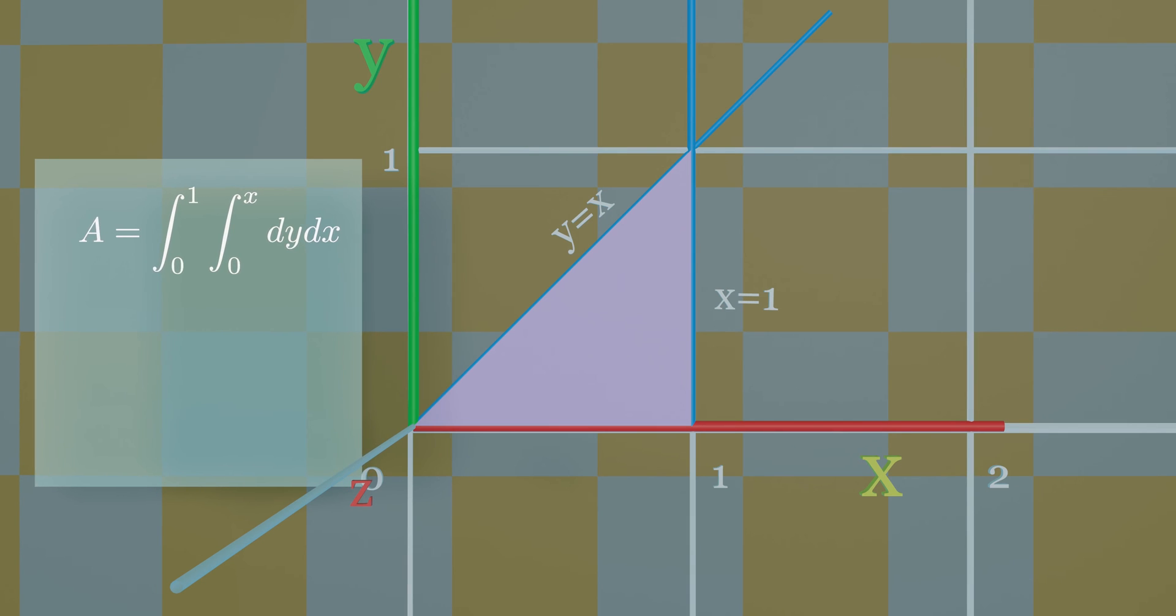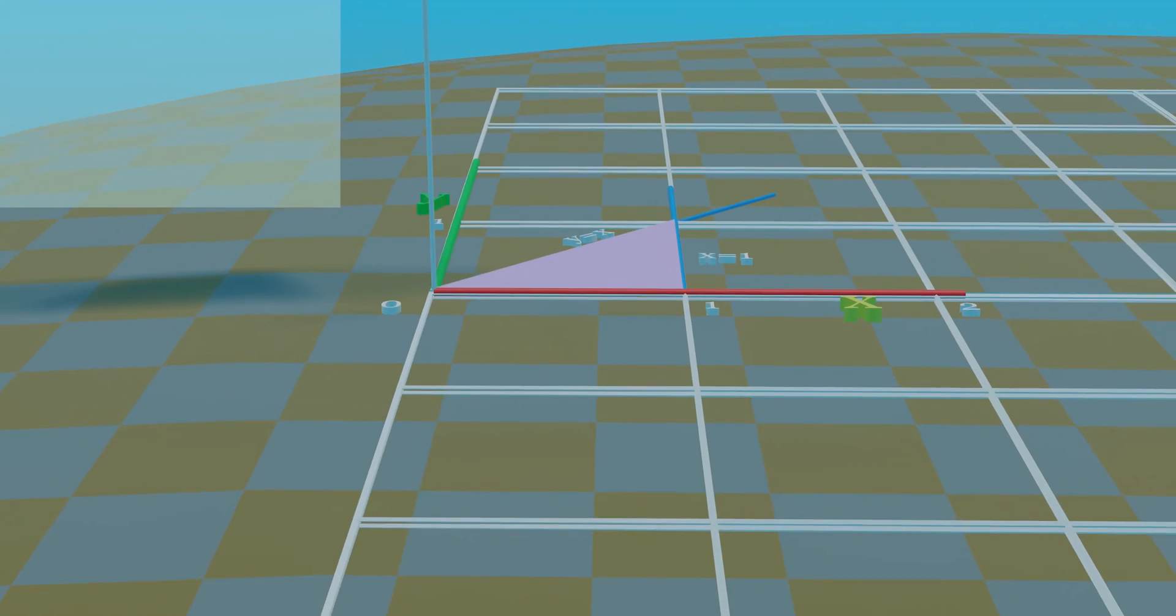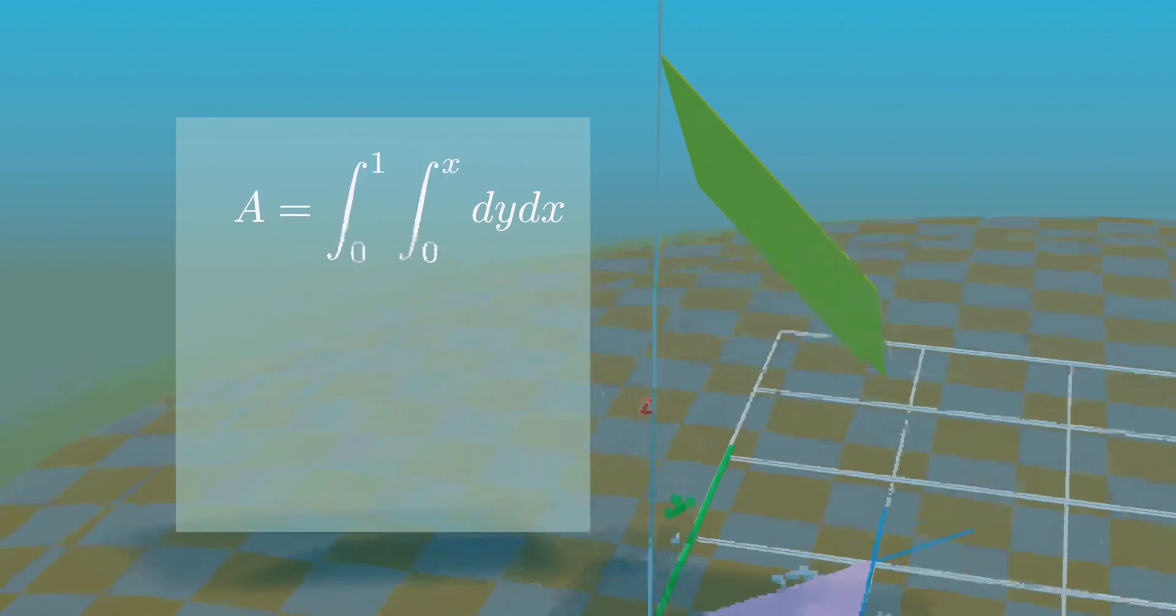But we don't want the area, we want the volume of this whole prism, whose top lies in the plane having this equation.